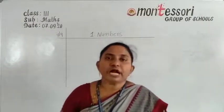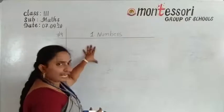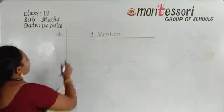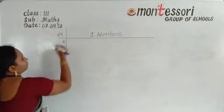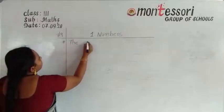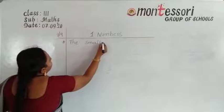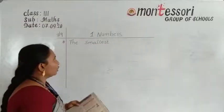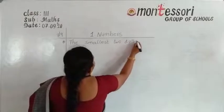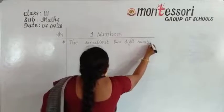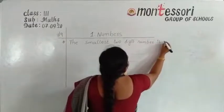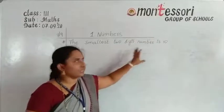We have started Chapter 1. I will give some points for you to note down in your classwork. First point: the smallest two-digit number is 10.